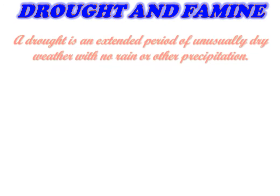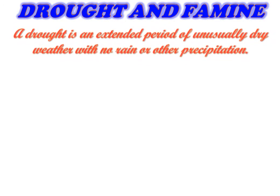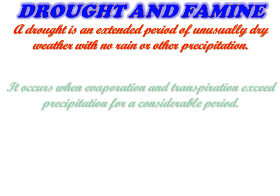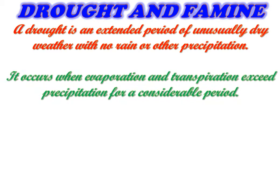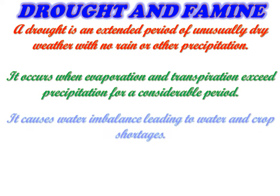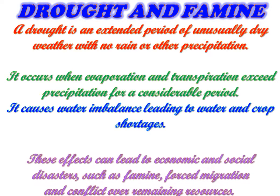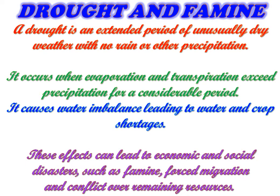A drought is an extended period of unusually dry weather with no rain or other precipitation. It occurs when evaporation and transpiration exceed precipitation for a considerable period. It causes water imbalance leading to water and crop shortages. These effects can lead to economic and social disasters such as famine, forced migration, and conflict over remaining resources.